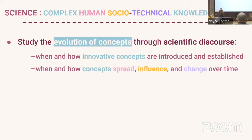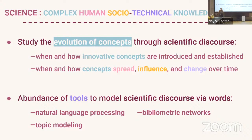Studying knowledge systems in this way is not necessarily a new thing. The main approach historically has been to study the evolution of concepts through scientific discourse — asking when and how innovative concepts get introduced, and when and how they spread and change over time. There are abundant quantitative tools for this, including natural language processing, topic modeling, and citation networks. A common theme is that they privilege words, but words may not be the only — or even the most important — way information gets communicated in science.